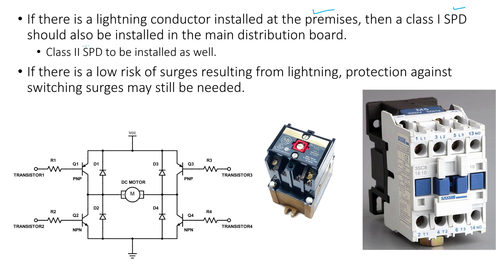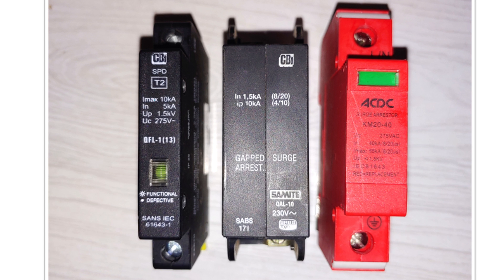If a lightning conductor is already installed at the premises, a Class 1 SPD should also be installed in the main distribution board along with a Class 2 SPD. There are requirements regarding installing Class 1 and Class 2 SPDs in close proximity, but that is beyond the scope of this video. It is always important to do your risk assessment, because even if lightning risk is low, there may still be risk from switching surges — such as contactors and motor controls — so surge protection may still be required.